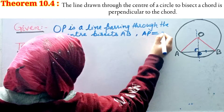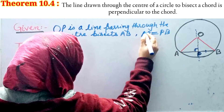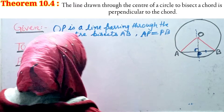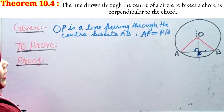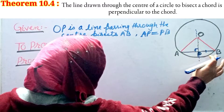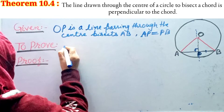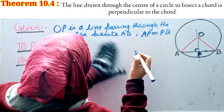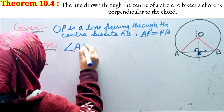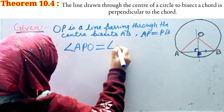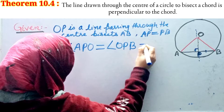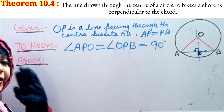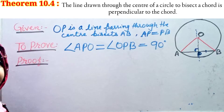It means AP equals PB — this is given. What do we have to prove? We have to prove that angle OPA equals angle OPB, and that is equal to 90 degrees. These two angles are equal and both are 90 degrees, meaning the line is perpendicular. A perpendicular line subtends a 90-degree angle.